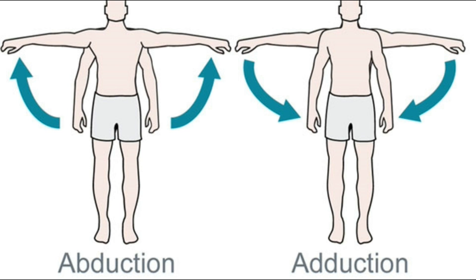What is abduction and adduction? These are two words used to describe the movements of limbs. Abduction is movement of a limb or part of a limb away from the midline of the body. Adduction is movement of a limb or part of a limb toward the midline.